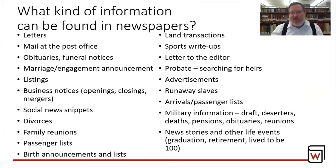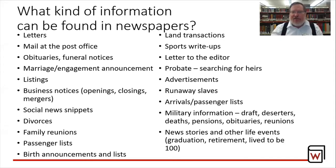So what kind of information can you find in any given newspaper? The list is varied as well as long, and this is just a sampling. From letters, obituaries, marriage information, divorce information, but also things like family reunions, passenger lists, slave advertisements, sport write-ups — things that identify and help us understand the content of our ancestors' lives.